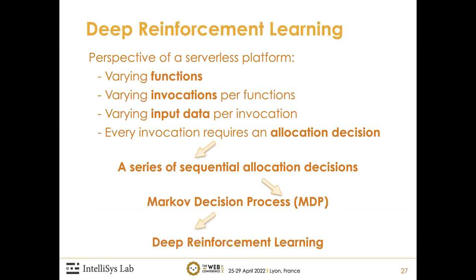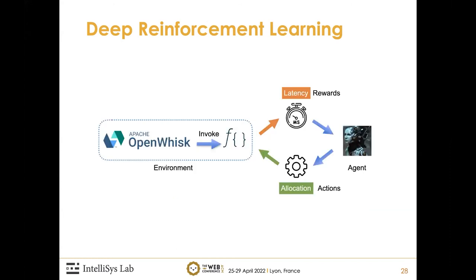Hence, we propose to use deep reinforcement learning to accurately estimate the resource saturation points. In a general reinforcement learning setting, an agent interacts with an environment through episodes of training. In each episode, the agent makes an action that is applied to the environment, and the environment gives a reward to judge whether the action was good or bad. In our setting, the environment is Apache OpenWhisk, an open-source distributed serverless framework that powers IBM Cloud Functions. The states are information from the function and the platform, and the actions are resource allocation per function.